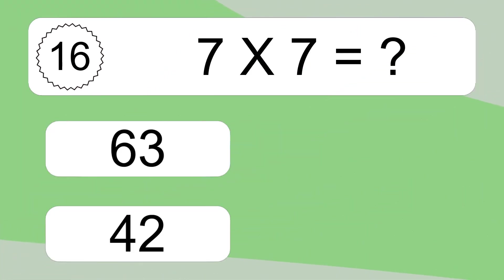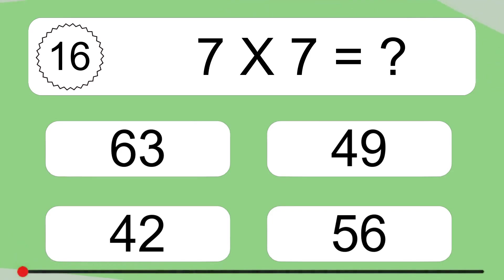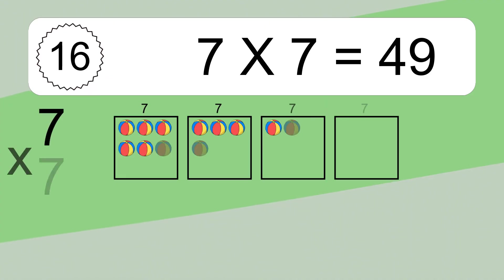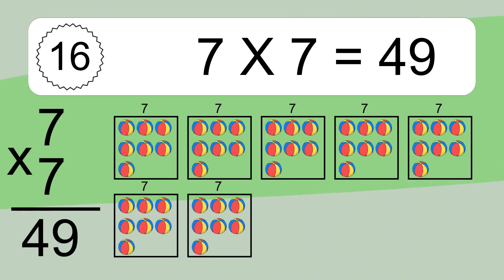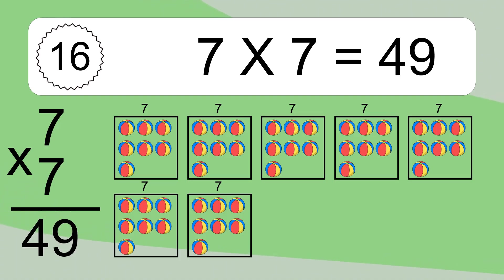Seven times seven equals what? Seven times seven equals 49. We have seven boxes, and each box has seven colorful balls inside. If you count all the balls in all the boxes together, you will have seven times seven balls. This equals 49 balls.